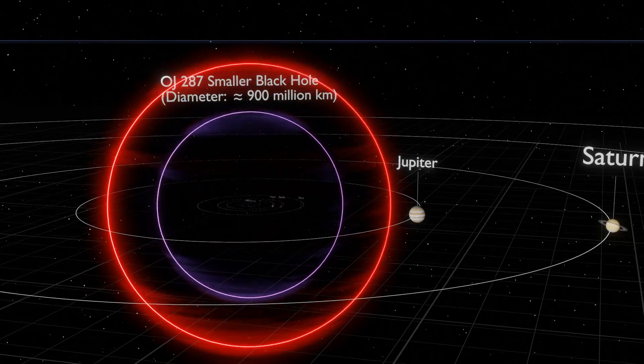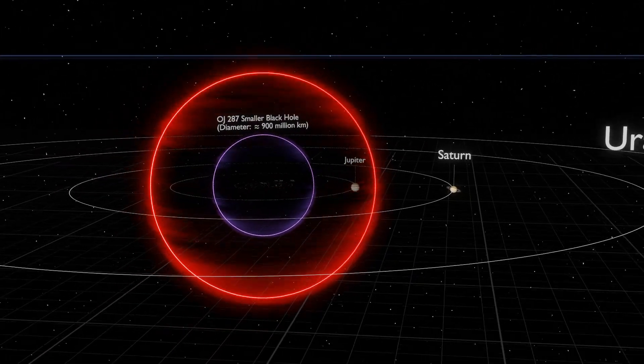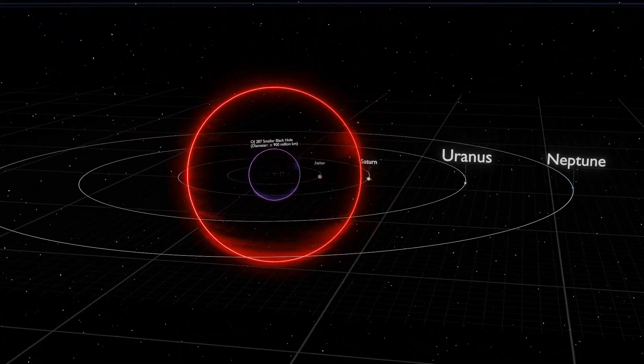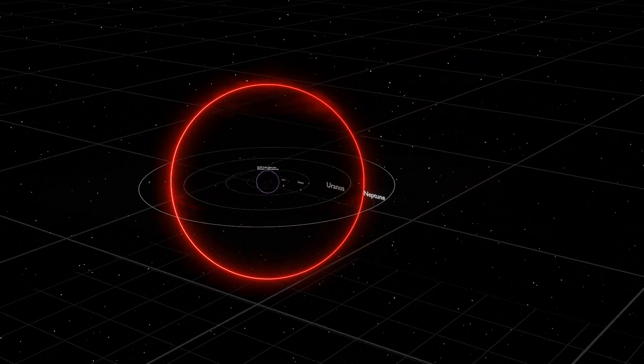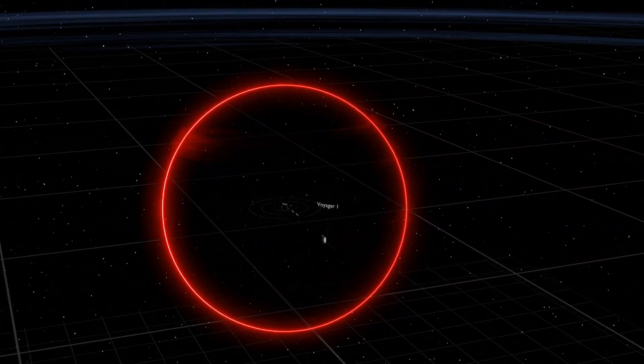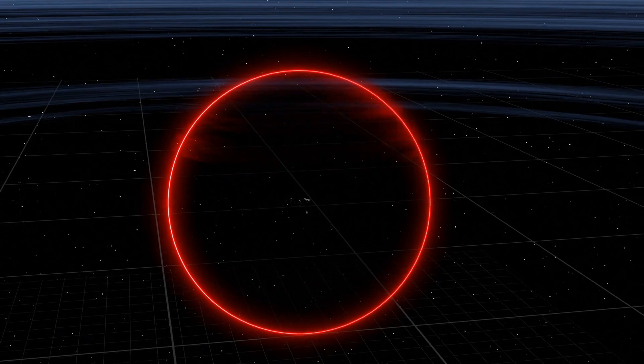The larger of the OJ 287 binary system is an ultra-massive black hole. It is so enormous that it would engulf our entire solar system.